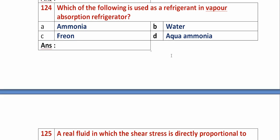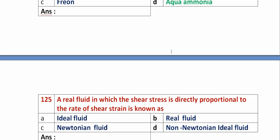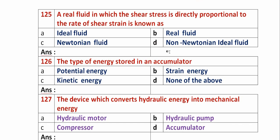Question 124: Which of the following is used as a refrigerant in a vapor absorption refrigerator? Option A: ammonia. Option B: water. Option C: Freon. Option D: aqua ammonia. Aqua ammonia is used as a refrigerant in a vapor absorption refrigerator, so option D is the right answer.